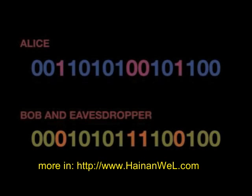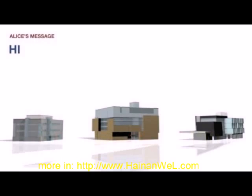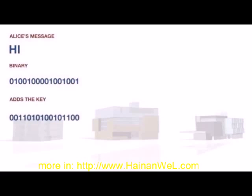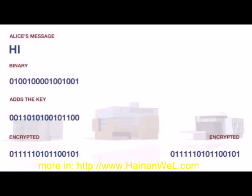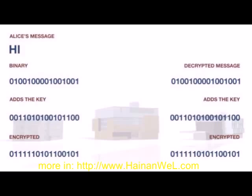Alice and Bob would see these errors and know that their key has been compromised. If no eavesdropper has been detected, Alice takes the message that she wants to send to Bob and converts it to binary. She then adds the string of zeros and ones that forms the key to the binary message, thus encrypting the transmission. Alice then sends the encrypted message to Bob, who uses his copy of the key to decrypt it. In the end, Alice and Bob have successfully shared their message.